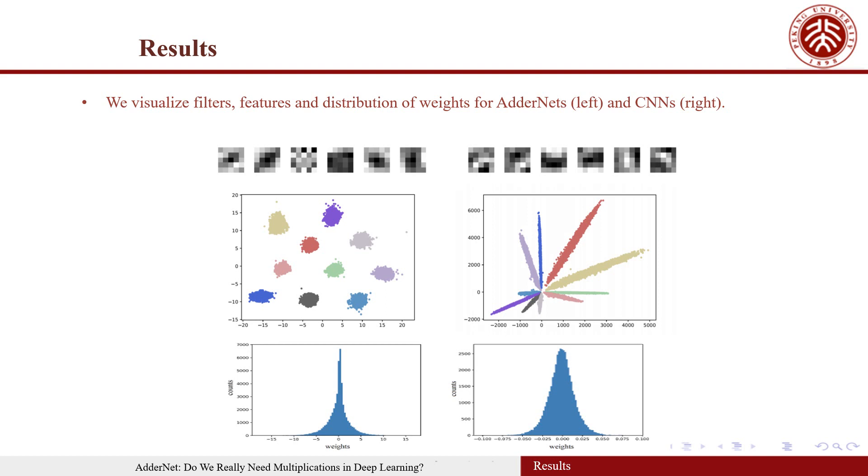The visualization results suggest that the L1 distance can also serve as a similarity measure, the distance between the filter and the input feature in deep neural networks.